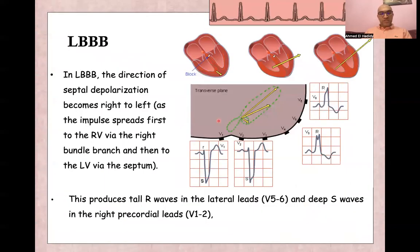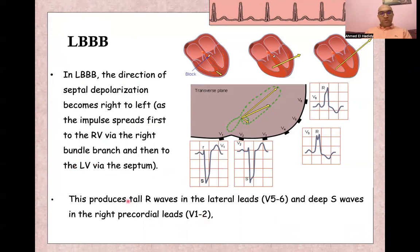In left bundle branch block, the direction of septal depolarization is totally changed — the septum is depolarized from right to left. This leads to a deep S wave in lead V1 and right-sided leads, and absence of the Q wave in lead V6. Depolarization will start from the right ventricle through the right bundle branch to the left ventricle and septum, producing tall R waves in lateral leads and deep S waves in right chest leads.